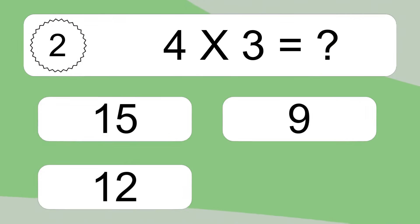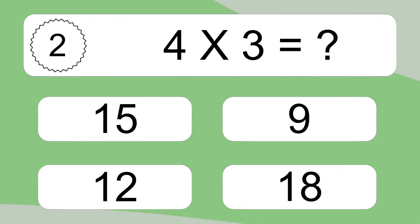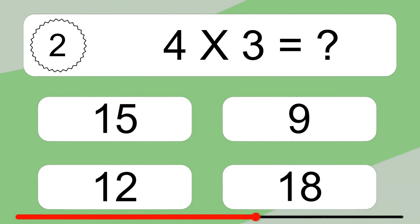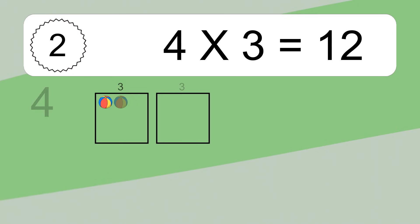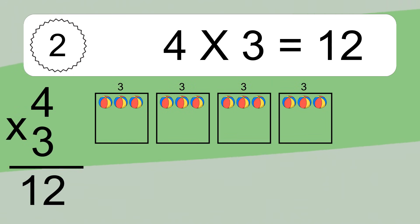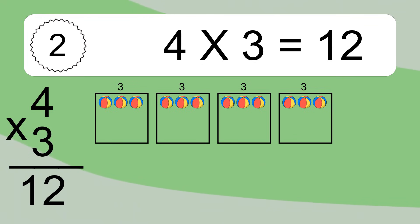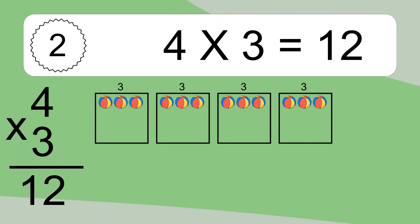4 times 3 equals what? 4 times 3 equals 12. We have 4 boxes, and each box has 3 colorful balls inside. If you count all the balls in all the boxes together, you will have 4 times 3 balls. This equals 12 balls.